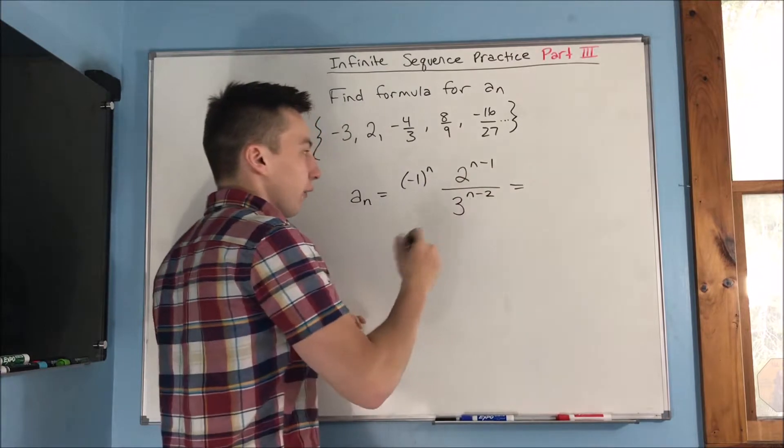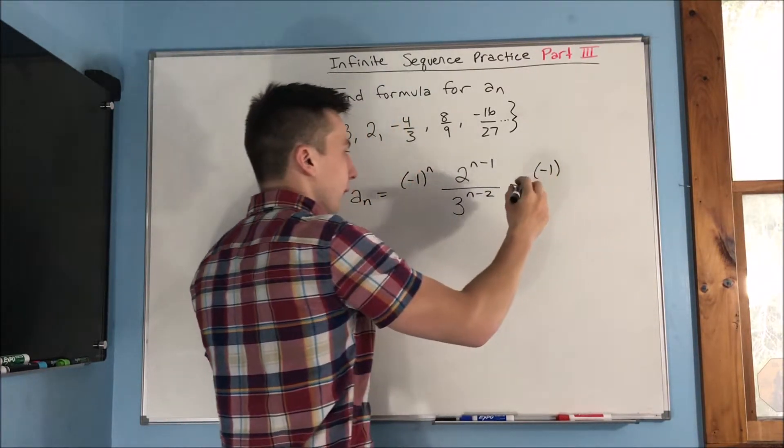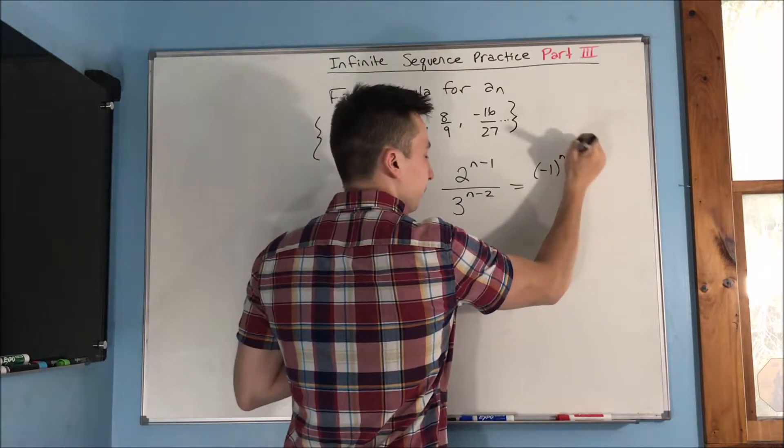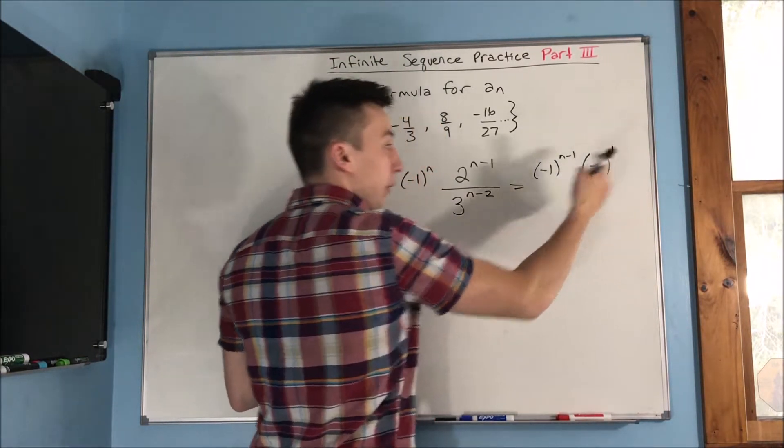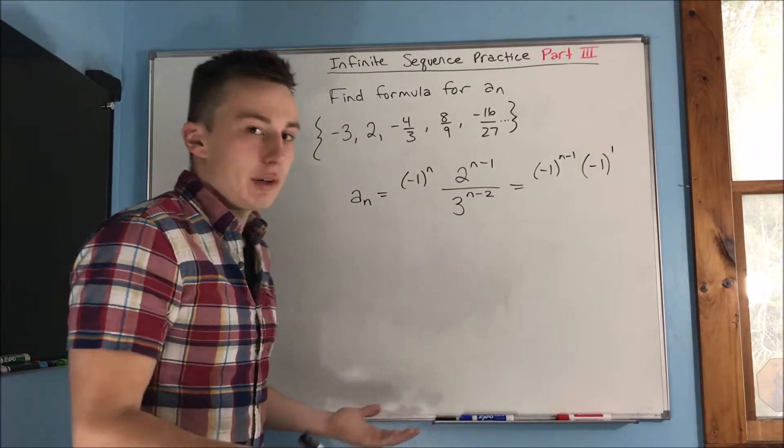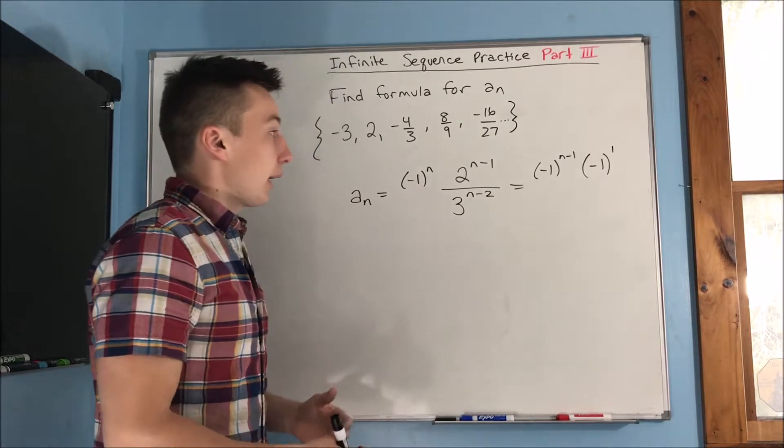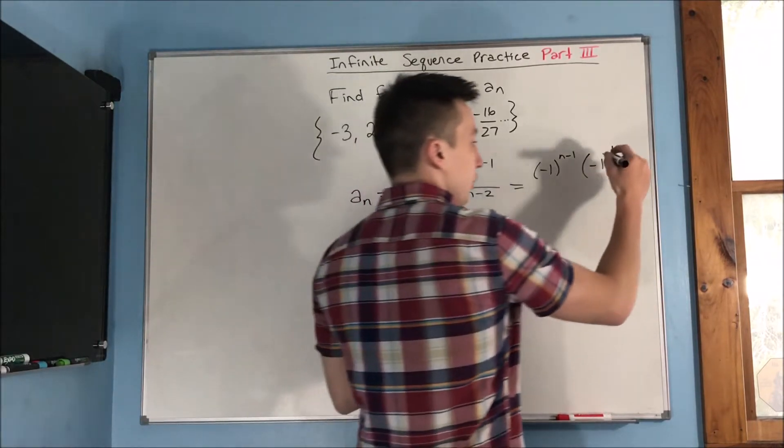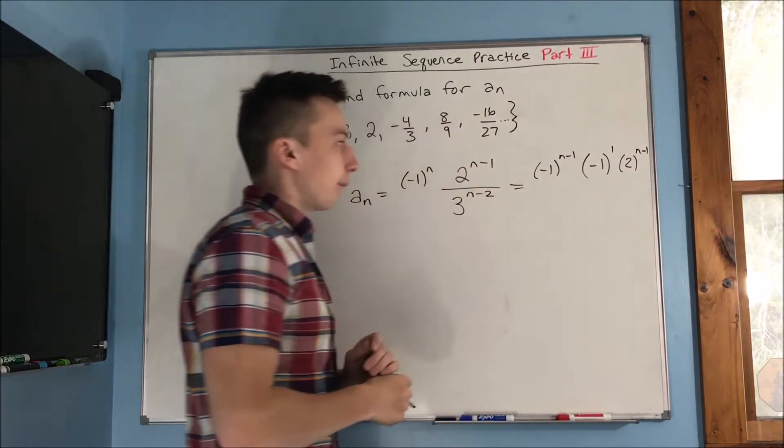So that means that for our negative one here, we're going to have a negative one to the n minus one times a negative one to the first power. You don't have to write first power, but it might help you a little bit to see what's going on. We also, in the numerator, have a two to the n minus one, cool.